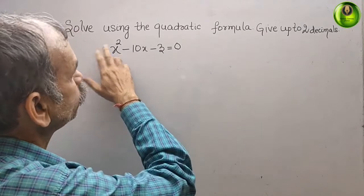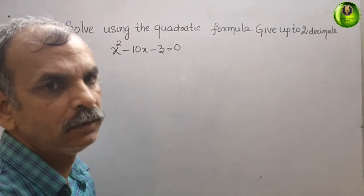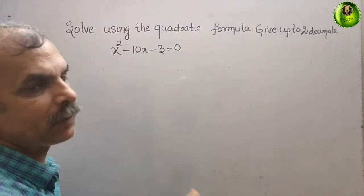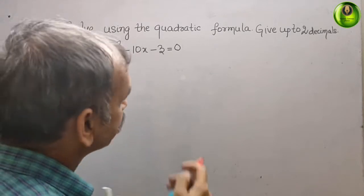Your question is: solve using the quadratic formula, give up to two decimals. They have given you x² - 10x - 3 = 0. First we will write the formula.